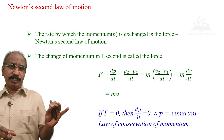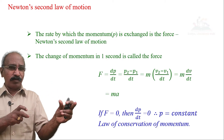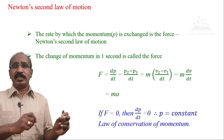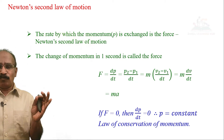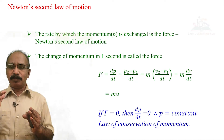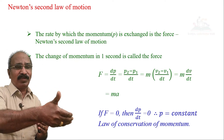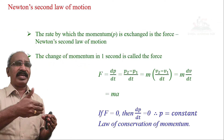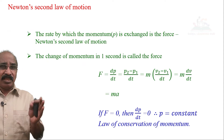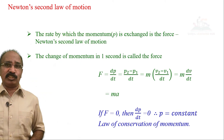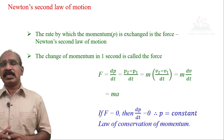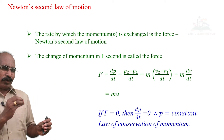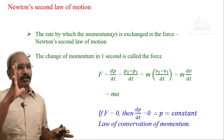In dt seconds, the change in momentum is p2 minus p1. In one second, the change of momentum is p2 minus p1 divided by dt. This is called force. Since momentum depends on mass times velocity, this simplifies to F = m times a — this is Newton's second law.